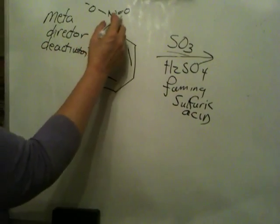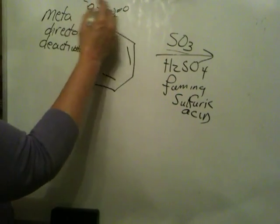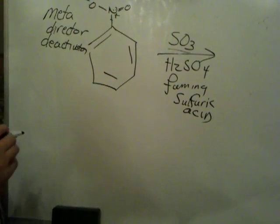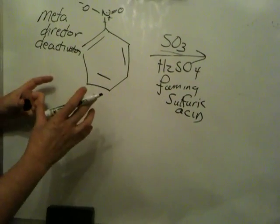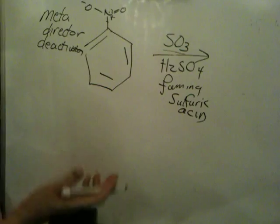The way you recognize an electron withdrawing group is the atom attached to the carbon has no lone pairs on it and it is either a plus charge or a delta plus charge. We have a plus charge here. This is a bookkeeping charge but remember O is more electronegative than N, so the electron density is being pulled out of the ring. So this ring is not as reactive as benzene.